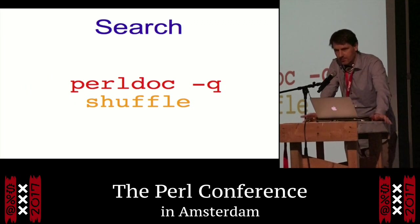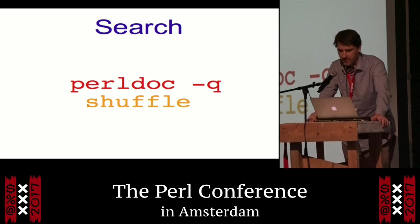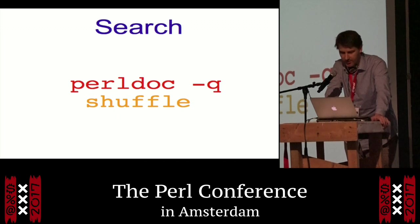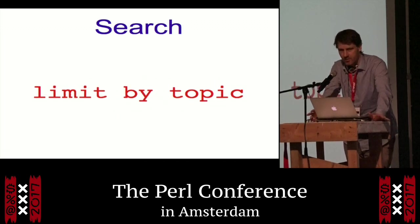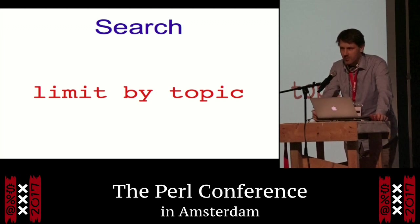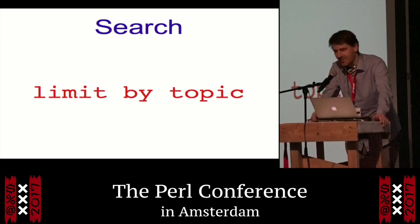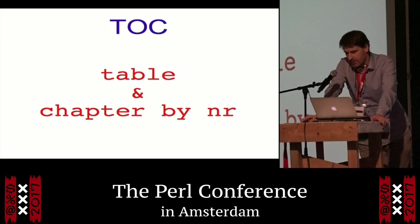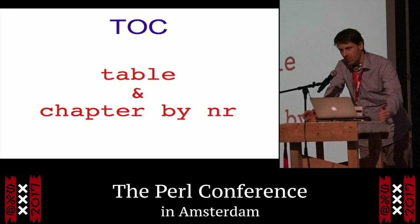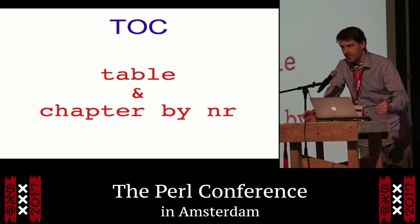You all know 'perldoc -q shuffle' — that searches the FAQ. But in the rest of the documentation you can't search. I want to change that. I want to be able to limit by topics, such as only in the operators or specific ranges of documentation. Who would like to see a search feature in the man pages? And who thinks it's a bad idea? I don't want to make crazy new stuff — I just want to expand what is there. I had another idea: an option that gives you just the headers of a pod documentation so you know what chapters are in there.